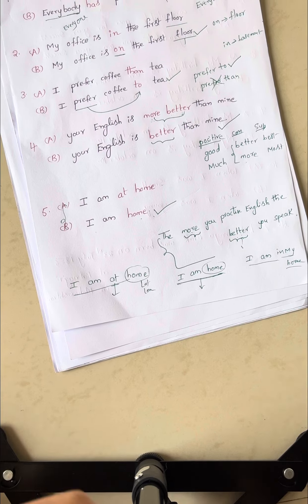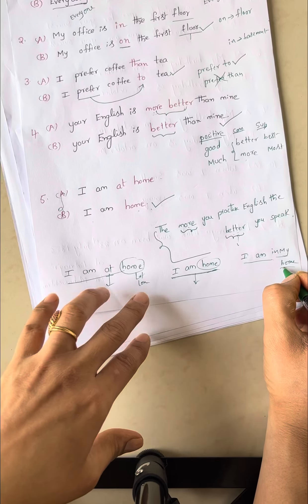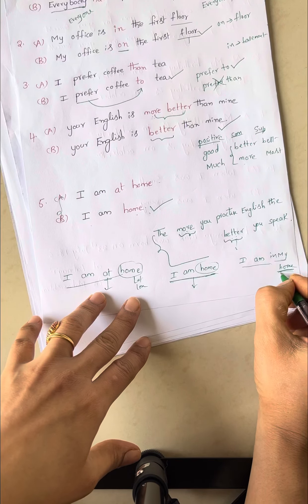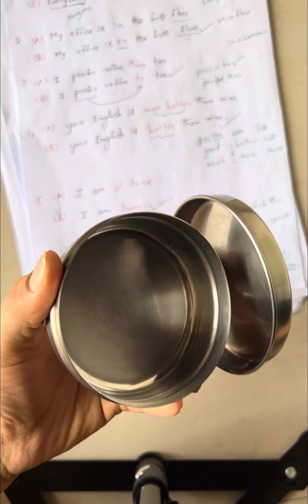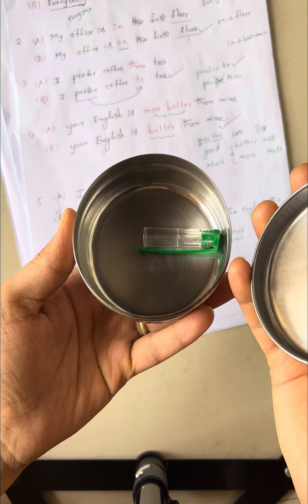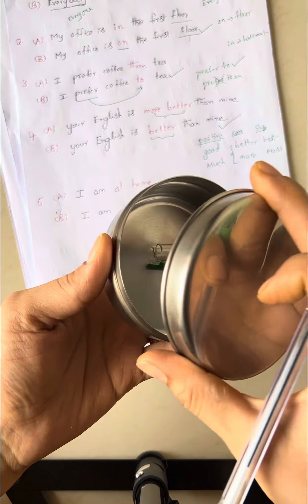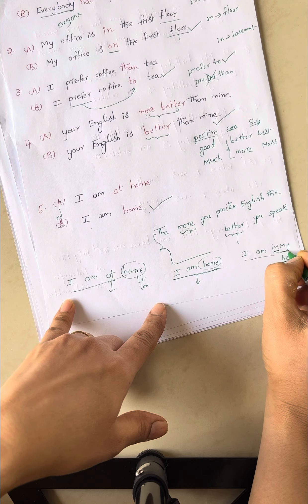I am in my home means when you consider home as a closed space — closed space like a box. If I keep a cap in this box, I say the cap is in the box. Similarly, when you consider home as a closed box, at that time you can use the preposition in. Closed box means it can be countable, that's why you use the determiner my.